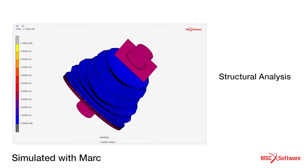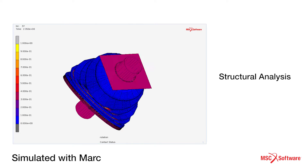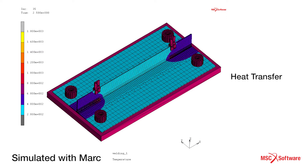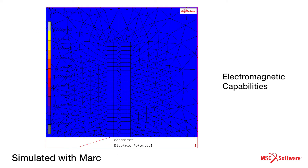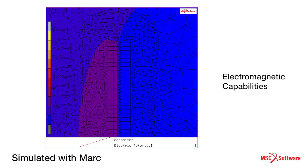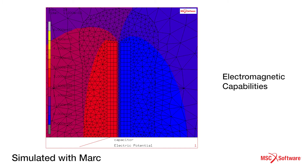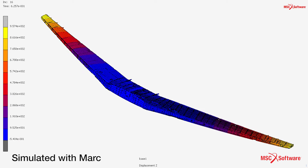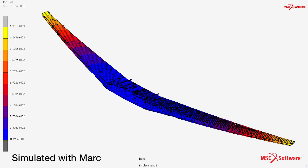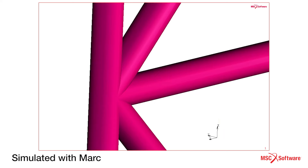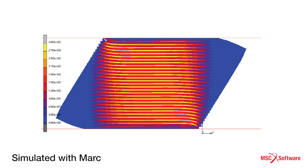MARC is a general-purpose program for solving nonlinear multi-physics problems for many branches of engineering. This includes structural analysis, heat transfer, and some electromagnetic capabilities. MARC is used in a variety of industries, including the aeronautics industry, the automotive industry, and even civil engineering applications.